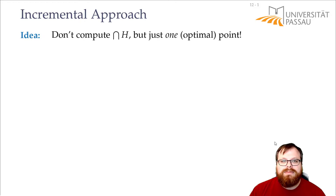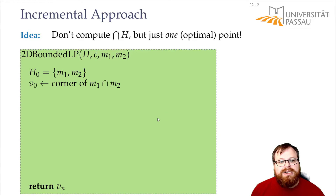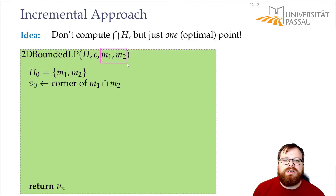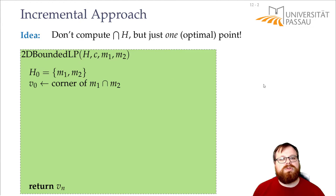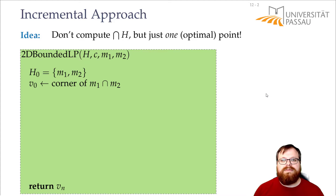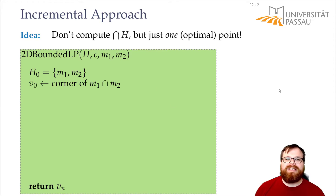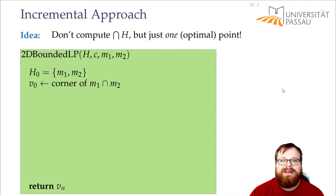This is our algorithm 2D Bounded LP. The input is the set of half planes, the vector C, and the two boundary half planes — for example the left and the bottom. We begin with just these two half planes and compute their intersection, which is just one quadrant. The optimum solution in the very beginning is the corner where these two half planes intersect. Wherever our vector C goes, this is the optimum we can reach. So in the very beginning, we already have some optimum point. Whenever we add a half plane and the optimum changes, we want to find the new optimum.